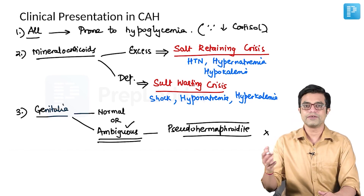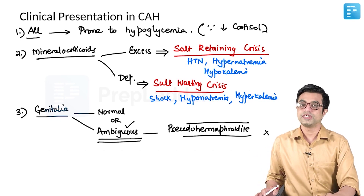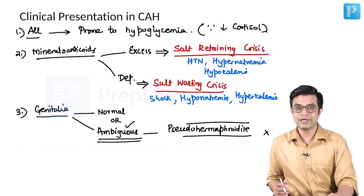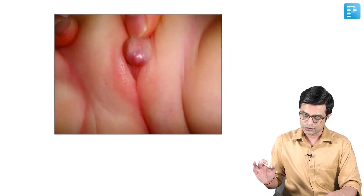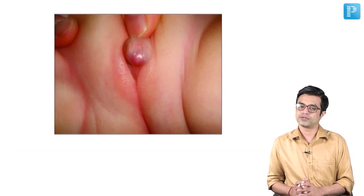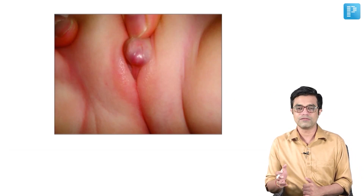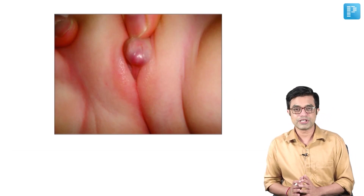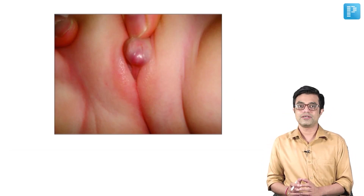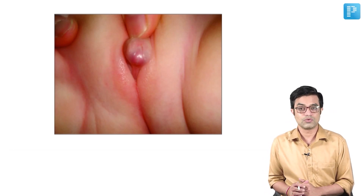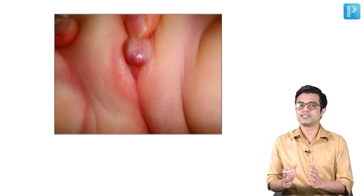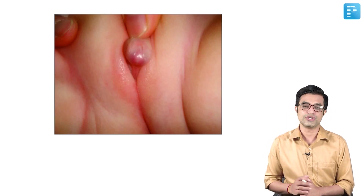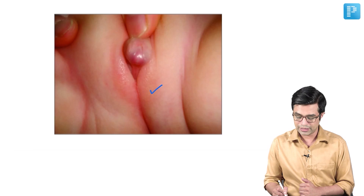Ambiguous genitalia is a significant problem not only in utero but later in life. Gender allocation in these children is problematic — once the diagnosis is made, you may find the child's phenotype does not match their genotype. A typical example was a patient who had a mosaic karyotype with both XY chromosomes and a Turner syndrome-like cell line (45,XO), along with 21-hydroxylase deficiency.